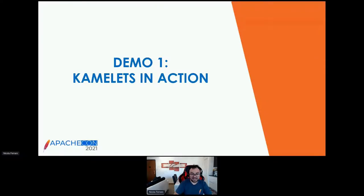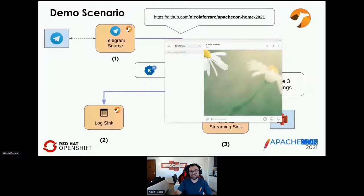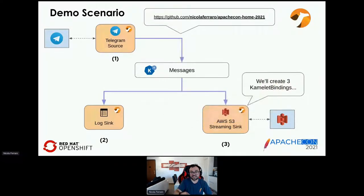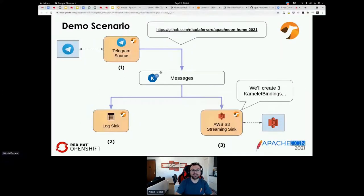Okay, it's demo time. I'm going to create a Knative channel in an OpenShift namespace — I have OpenShift with Knative installed. Then I'm going to bring data from a Telegram source. Basically, I have this Telegram chat and I'll write some data that will flow into a messages channel. Then I will print the logs of the messages into an integration, and create another binding to AWS S3 to create files from messages pushed into this channel. We're going to create three Camel K bindings.